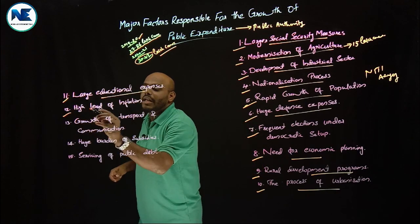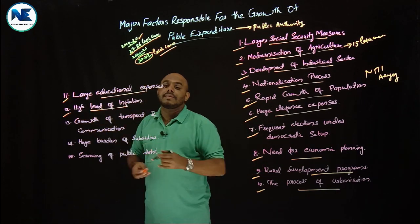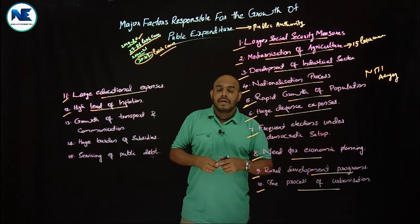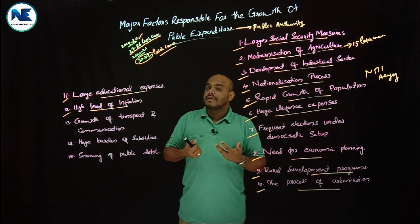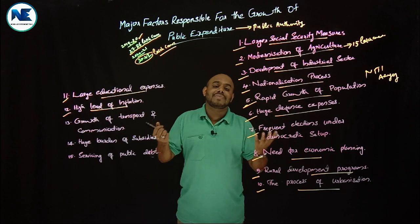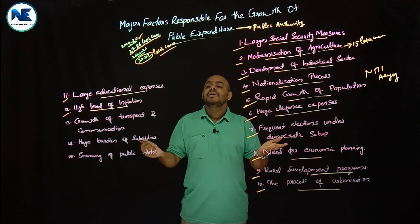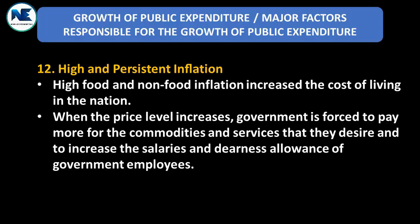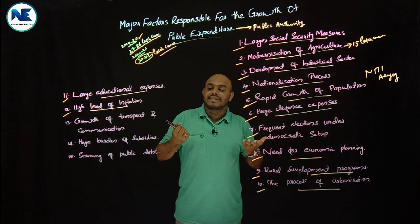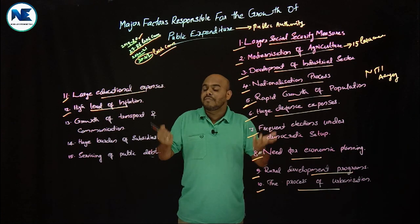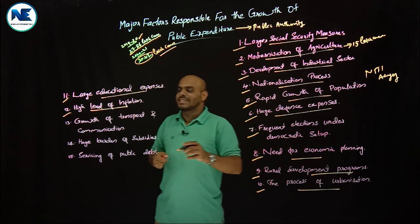The twelfth point is a high and persistent level of inflation. Inflation raises the cost of living and the cost of government operations. This is also responsible for the growth of public expenditure.